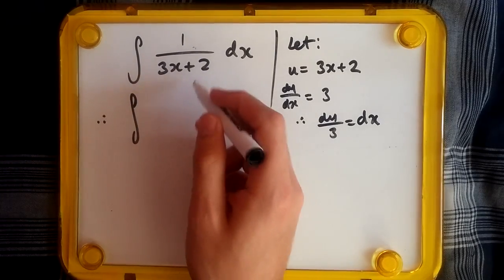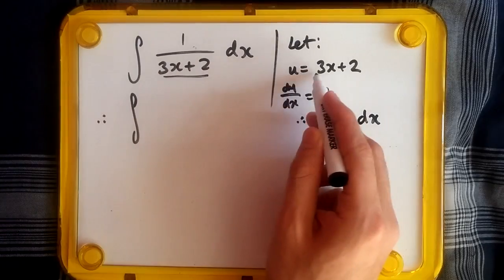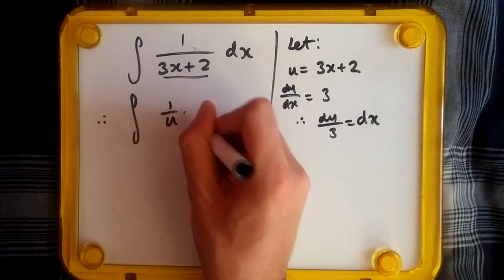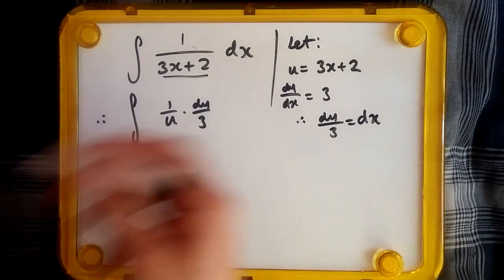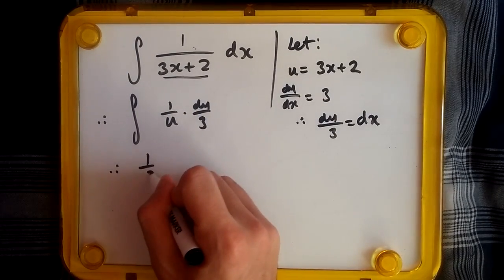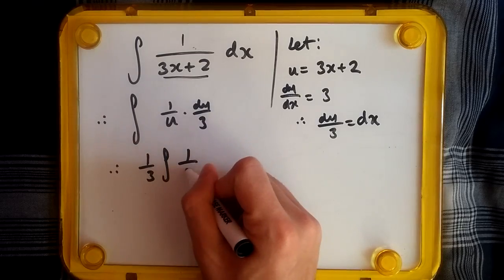Well, since we got 1 over 3x plus 2, we should get 1 over u, and dx is now du over 3. As 3 is a constant, you can throw it outside. So here we get 1 over 3, integral of 1 over u, du.